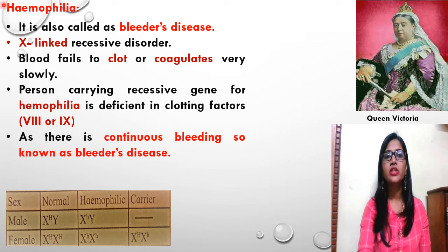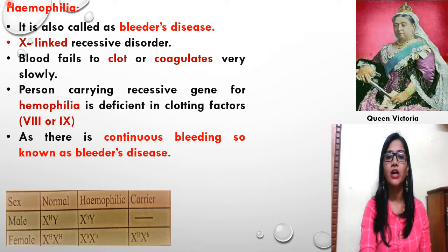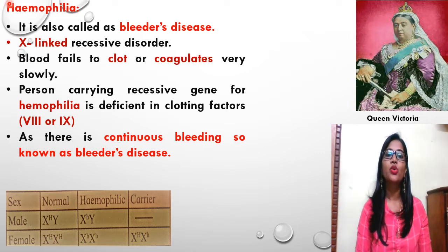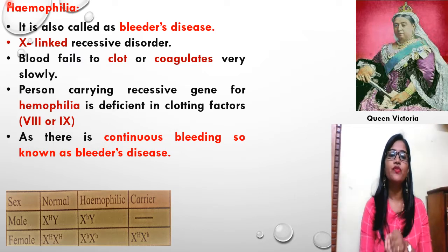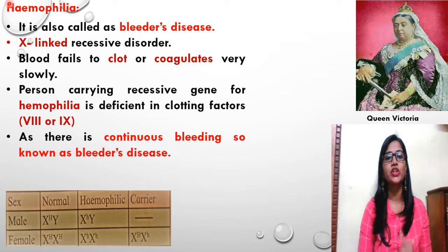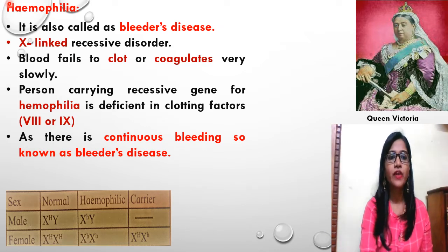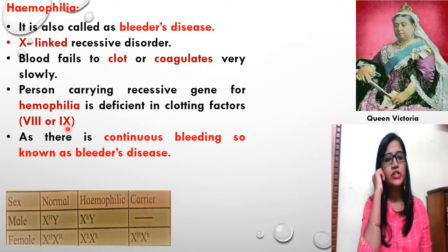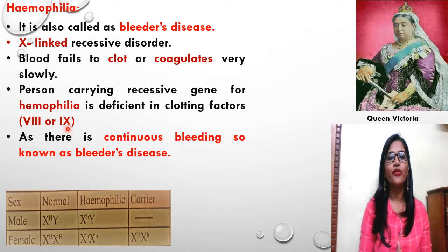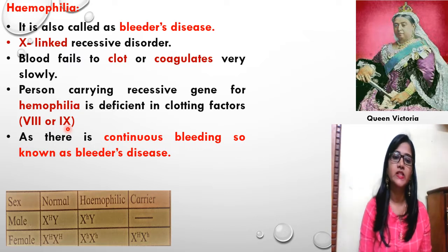Talking about the genes responsible for Haemophilia, there are dominant and recessive genes. The person having the recessive gene for Haemophilia is deficient in clotting factors — these clotting factors are 8 or 9 in the blood. So even minor injuries cause continuous bleeding; hence Haemophilia is also called Bleeder's Disease.